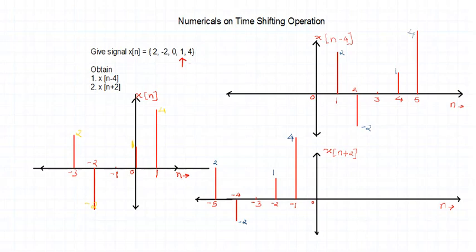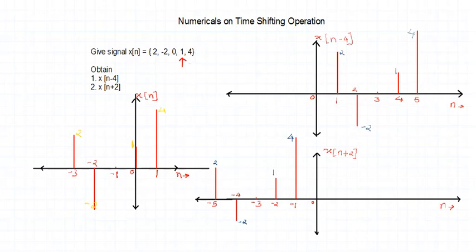Similarly, for DT signals: XN has 5 samples with an arrow indicating the 0th position. The sample of magnitude 1 is at 0, samples at minus 1, minus 2 (magnitude minus 2), and minus 3 (magnitude 2) are to the left, and one sample is to the right. For X(n - 4), the minus sign means shift to the right by 4 units. The first sample at minus 3 shifted by 4 units will appear at 1.